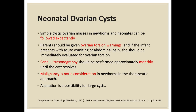For neonatal ovarian cysts, simple cystic ovarian masses among newborns can be followed expectantly—no urgent surgery is required. Parents should be given ovarian torsion warnings, and if the infant presents with acute vomiting or abdominal pain, the infant should be immediately evaluated for ovarian torsion. Serial ultrasonography should be performed approximately monthly until the cyst resolves. Malignancy is not a consideration among newborns, and for large cysts, ultrasound-guided aspiration can be performed.